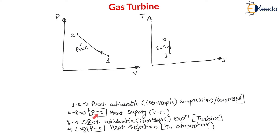Process 2 to 3 is constant pressure heat supply in the combustion chamber. At constant pressure, as heat is supplied, volume increases on the PV diagram. On the TS diagram, both entropy and temperature increase, giving a constant pressure process line from 2 to 3.